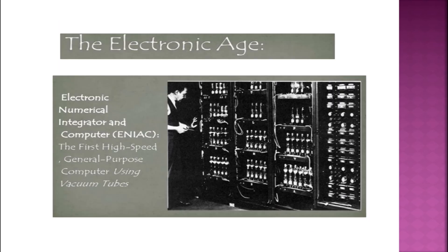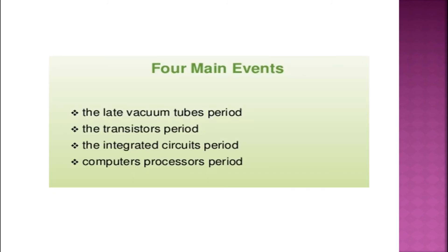The fourth and latest age is the electronic age, the age in which we are living in today, and it started in 1940. One of the first fully functional computer systems was the ENIAC, the first high-speed digital computer, which made it special was the fact that it could be programmed to solve a whole range of complicated computing problems. When it comes to the age of digital computing, there were four stages of development. The first systems relied upon vacuum tubes and punch cards, in systems such as the Mark I and the ENIAC.